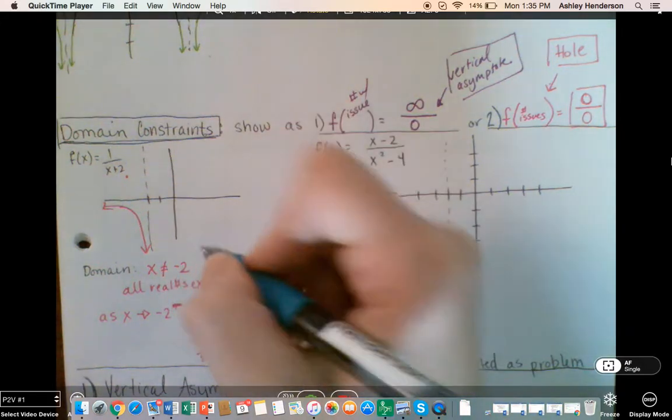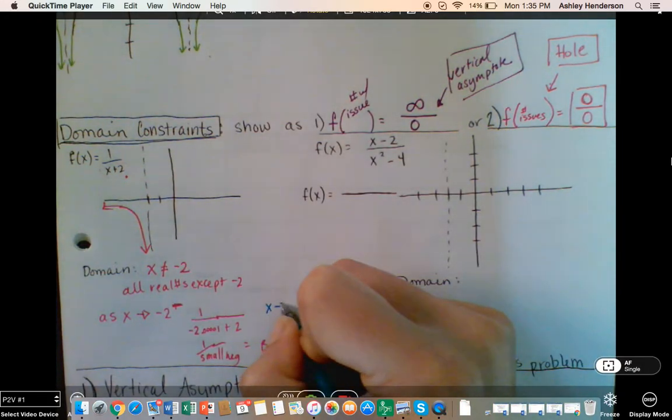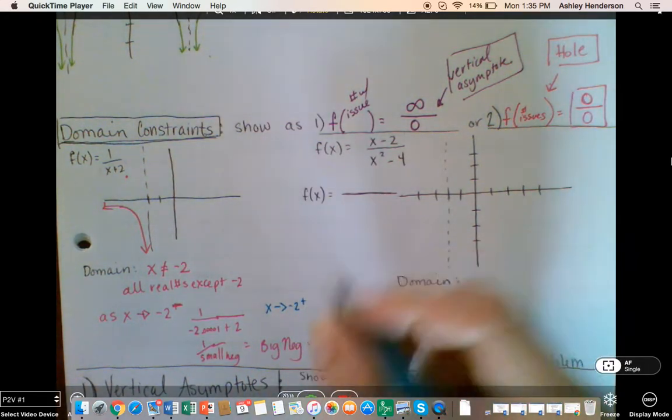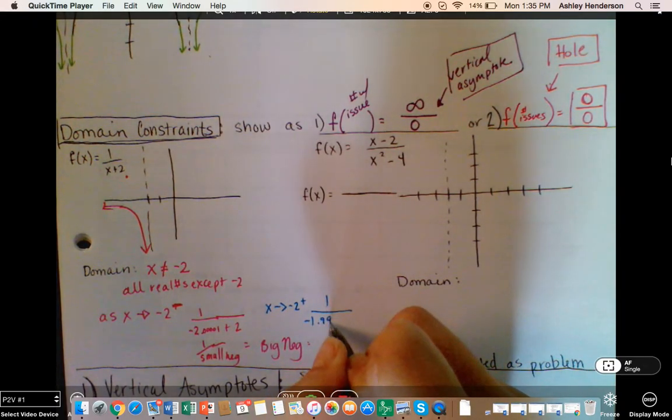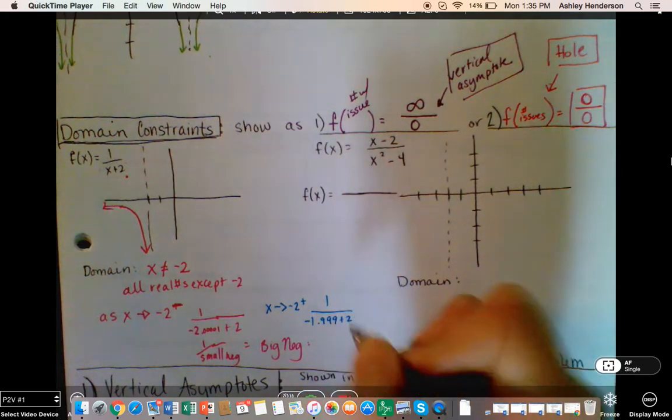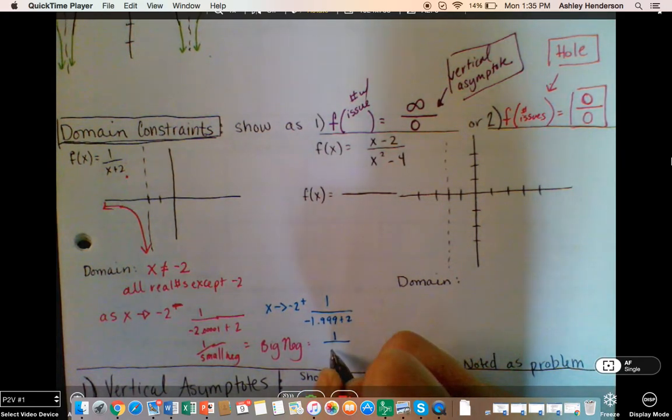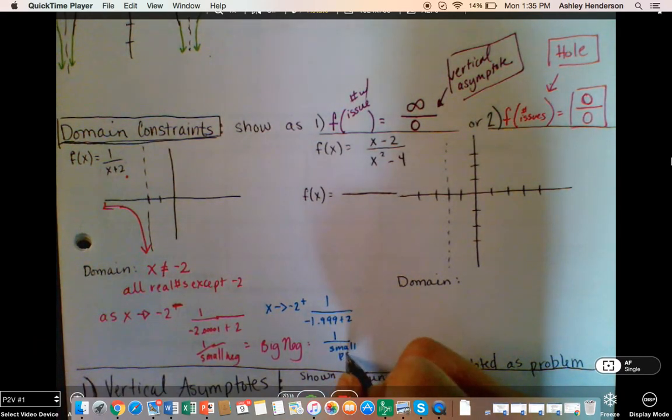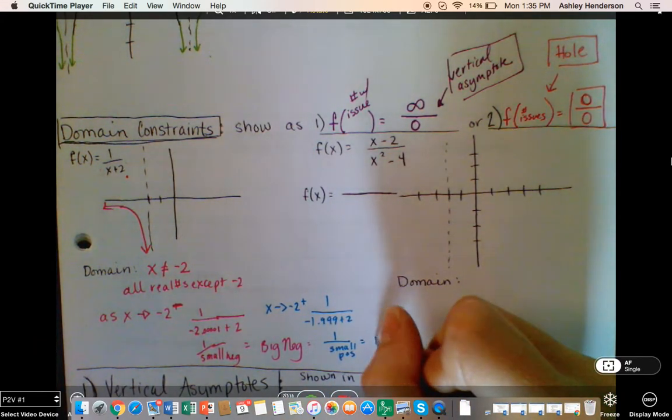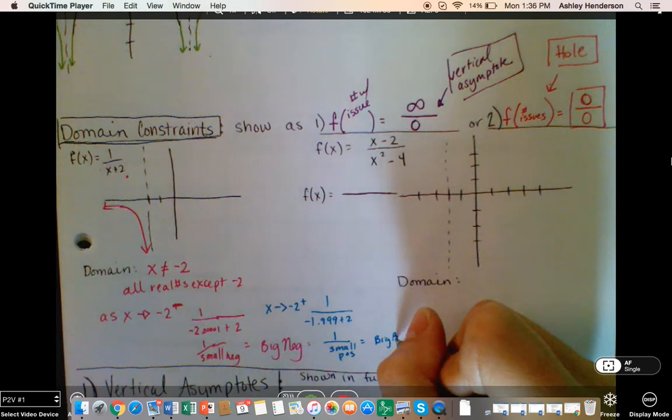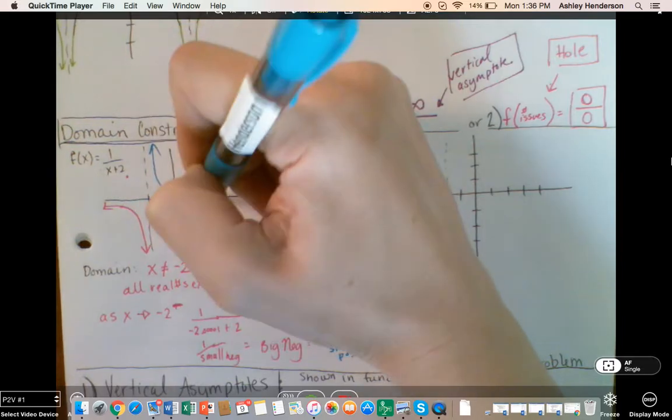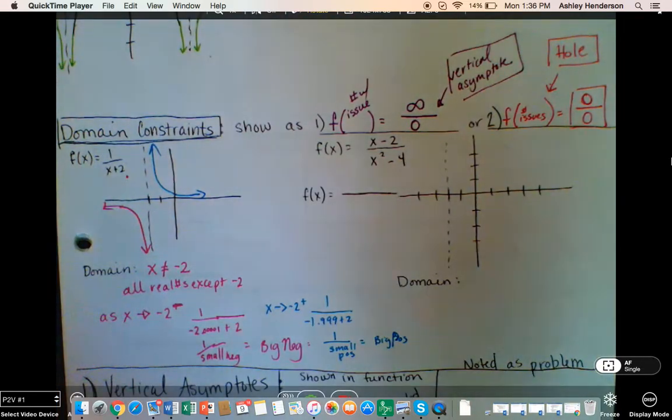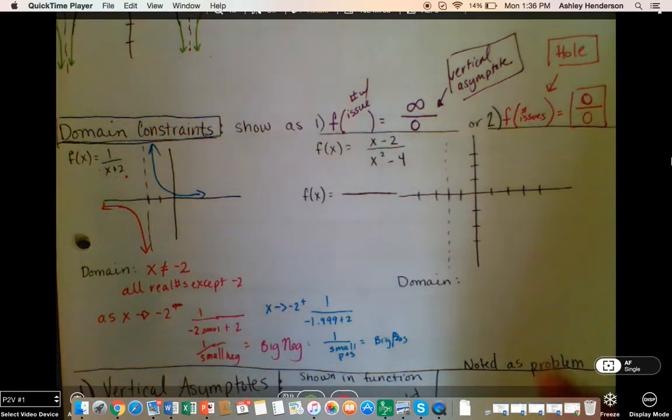When we come from the right, that would be something more like 1 over negative 1.999 plus 2, which is going to be 1 over a small positive number, which is a big positive. So this guy's going to do something more like that.